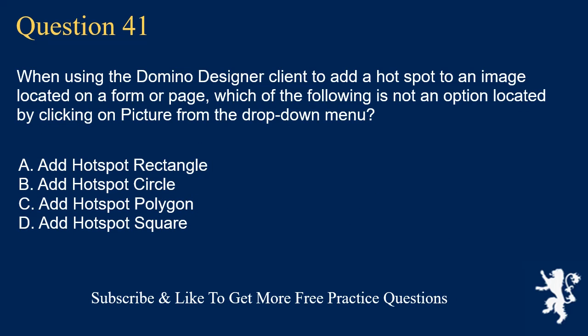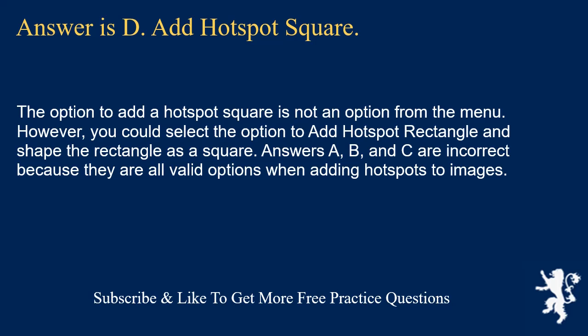Question 41. When using the Domino designer client to add a hotspot to an image on a form or page, which of the following is not an option from the Picture drop-down menu? Add hotspot rectangle. Add hotspot circle. Add hotspot polygon. Add hotspot square. Answer is D: Add hotspot square. The option to add a hotspot square is not an option from the menu. However, you could select add hotspot rectangle and shape it as a square. Answers A, B, and C are incorrect because they are all valid options when adding hotspots to images.